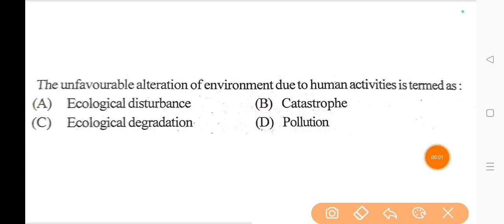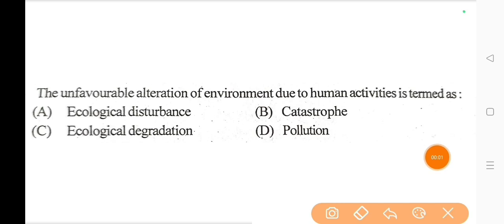Next question, the unfavorable alteration of environment due to human activities is termed as? Option D, pollution. Because human activity, which affects land, water, air, and other parts of the environment.